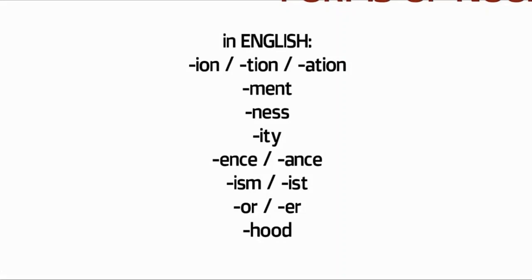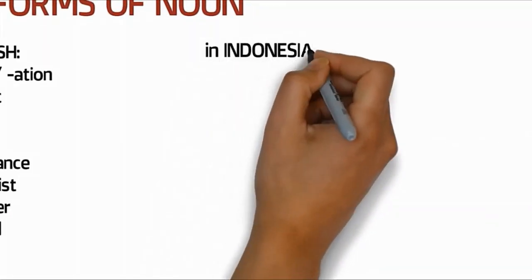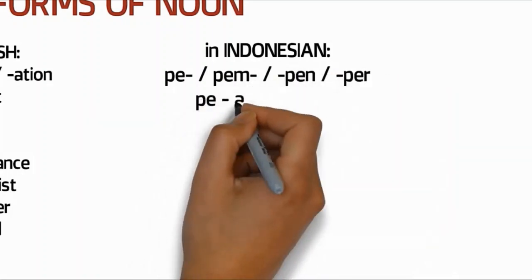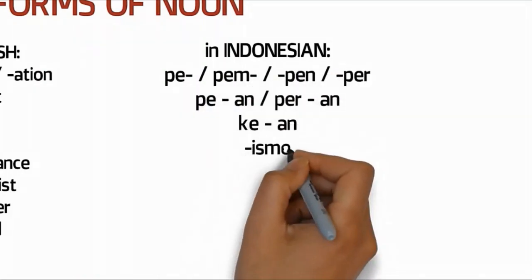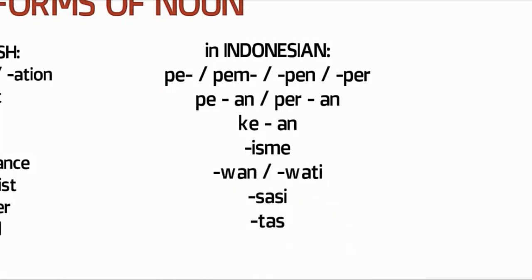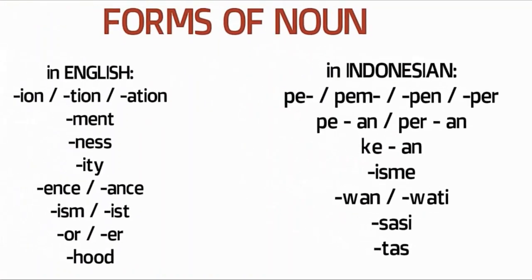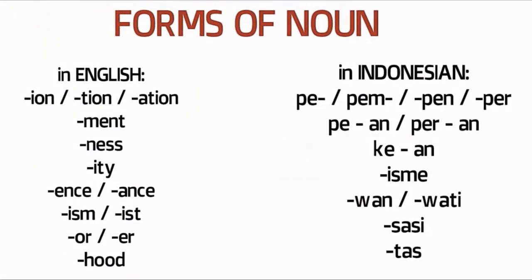In Bahasa Indonesia, it's the same - we look at the affixes used. There are prefixes like pe-, prefix and suffix combinations like ke-an, suffixes like -isma, -wan or -wati, -sasi (realisasi), or -tas (kualitas, kuantitas). With these affixes, they become nouns. So remember these forms if you have difficulty understanding texts or writing in English. This is the key to writing nouns.